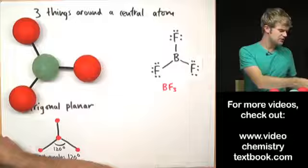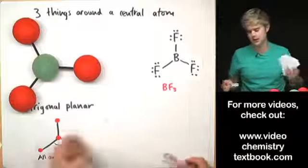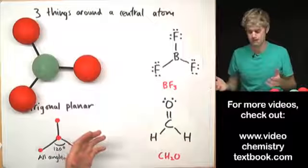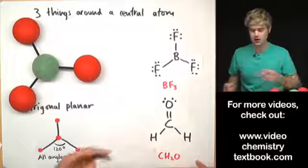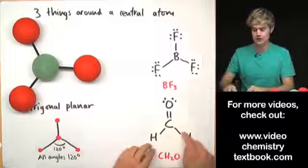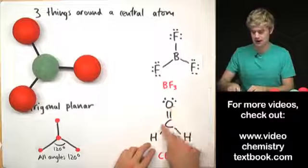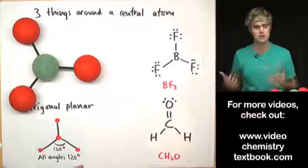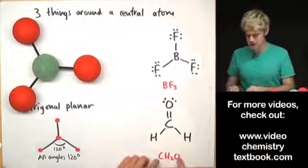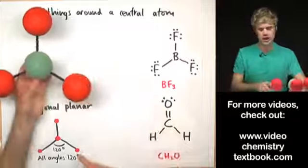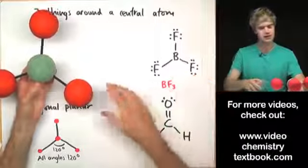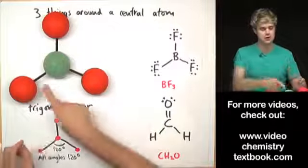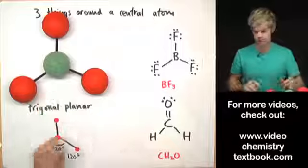Just as before, it doesn't matter whether we're talking about double bonds, single bonds, or triple bonds — it's all the same. In CH2O, I have three things surrounding the central atom: a double bond, a single bond, and a single bond, but it's still just three things that want to be as far from each other as possible. So CH2O is going to have the same shape in three dimensions as BF3 — it's going to be a trigonal planar molecule with 120 degrees between each pair of bonds.